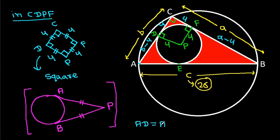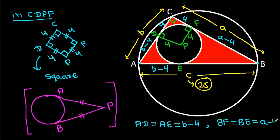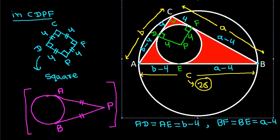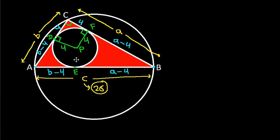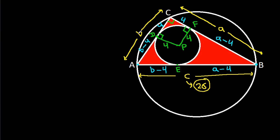From point A, AD equals AE, which is b minus 4. From point B, BF equals BE, which is a minus 4. Now, AB equals c, which is 26. And AB equals AE plus BE, so that is also 26.